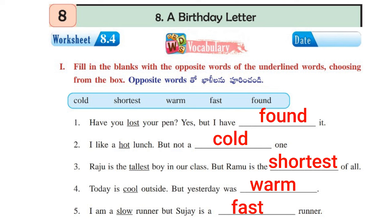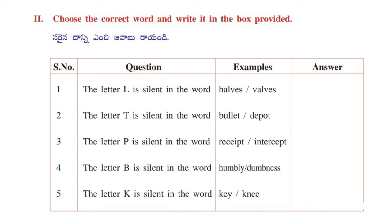Let's move on to worksheet number 8.4. Here we have given some sentences with blanks. In the blank, we have to write down the opposite of the underlined word in the sentence. First one: Lost — opposite is found. Next: Hot — opposite is cold. Next: Tallest — opposite is shortest. Next: Cool — opposite is warm. Next: Slow — opposite is fast.